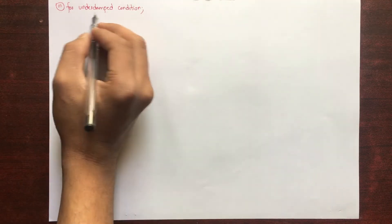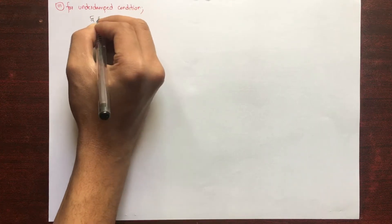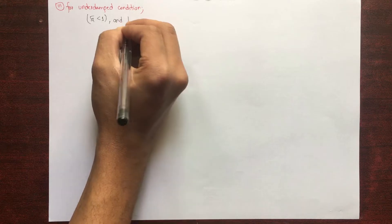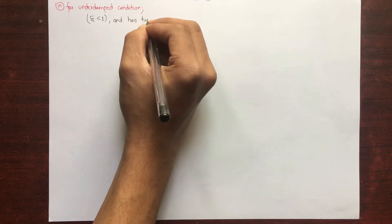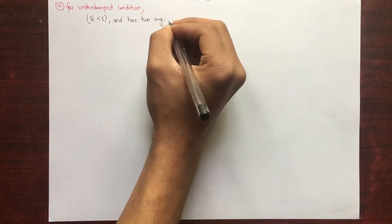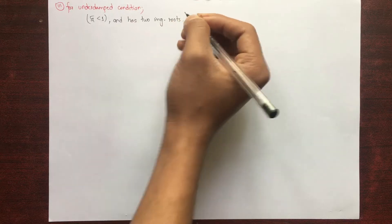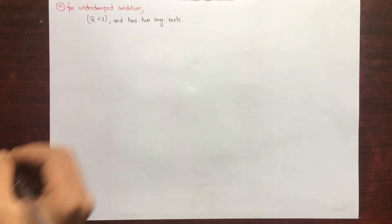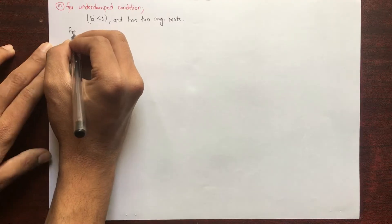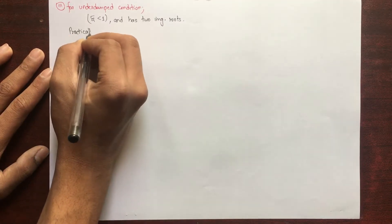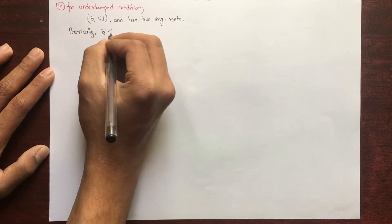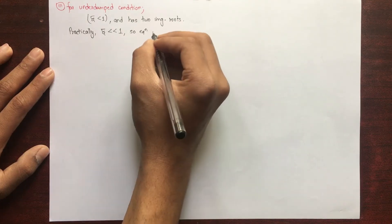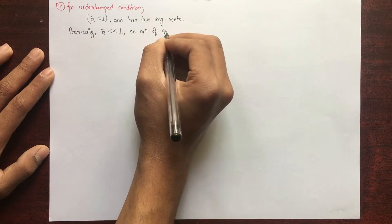The third case is the underdamped condition, where the value of xi (ξ) is less than one. As discussed in the previous video, it has two imaginary roots. In practice, the value of the damping ratio in structures is very much less than one — very very small — so the quadratic equation form changes.